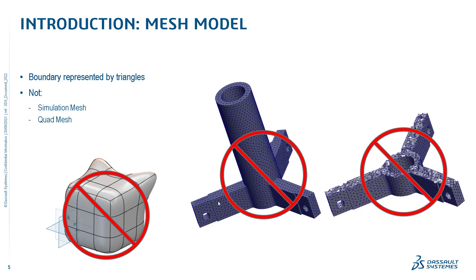A simulation mesh is 3D geometry that has been discretized using small three-dimensional units — in this case, tetrahedrons. The geometry inside the volume of the model is also discretized and analyzed in the simulation. On the left, we have a quad mesh, generated in X shape. The meshes we are referring to are purely triangular meshes.